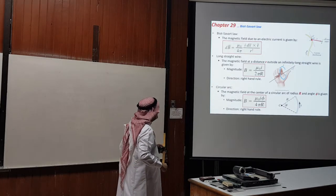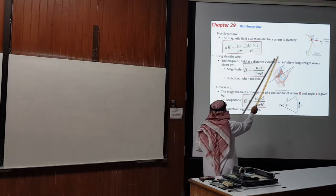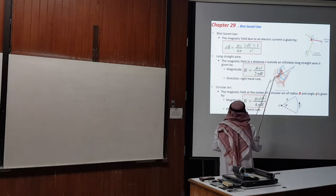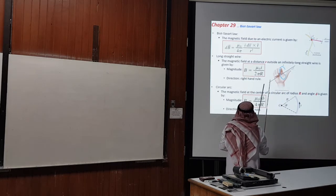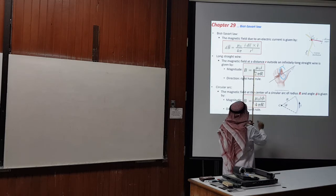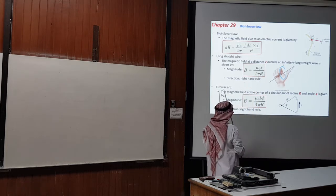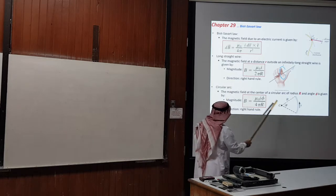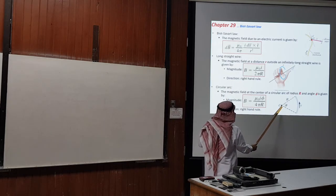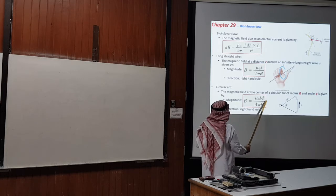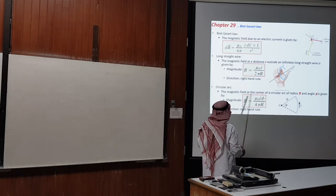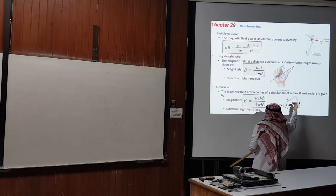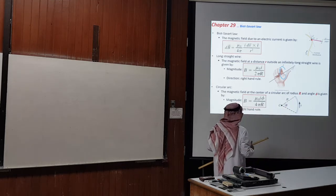Let's review the Biot-Savart law. It enables us to calculate the magnetic fields produced by electric currents. For an infinitely long straight wire, the magnetic field at distance r is μ₀I over 2πr, with direction given by the right-hand rule. For a circular arc, the magnetic field at the center is μ₀Iφ divided by 4π times the radius, where φ is the central angle, and its direction is again given by the right-hand rule.